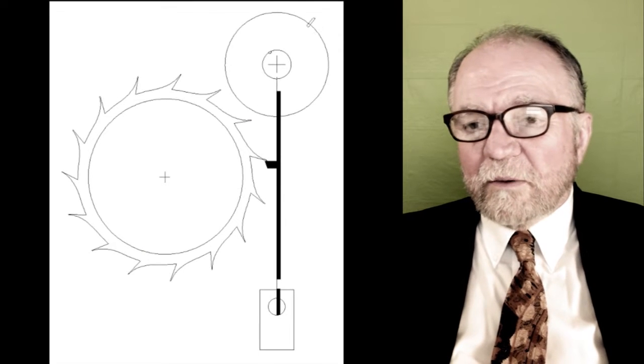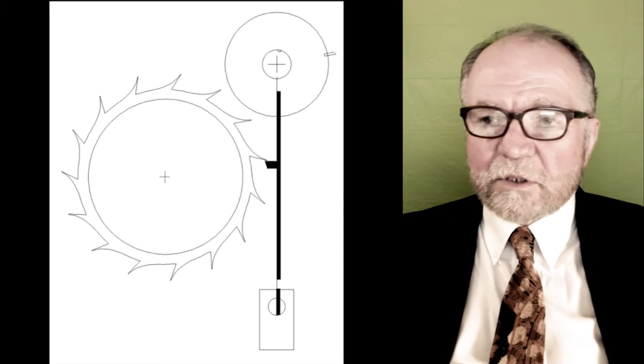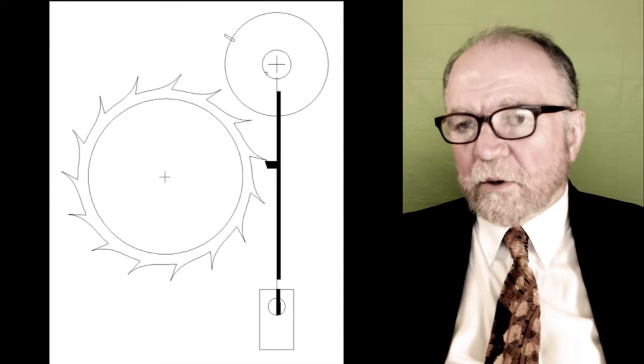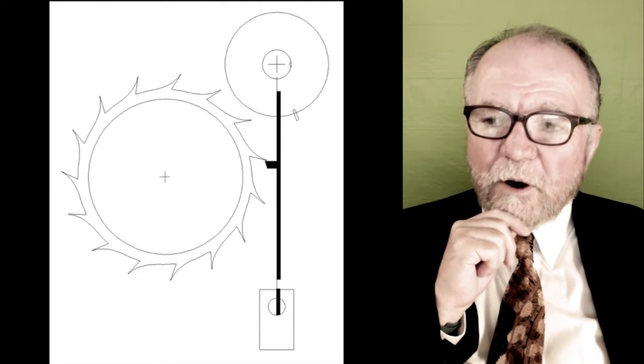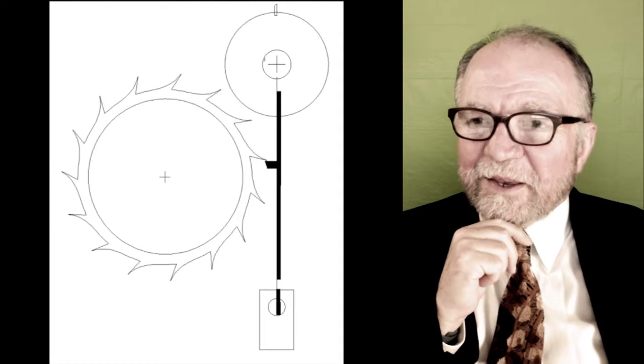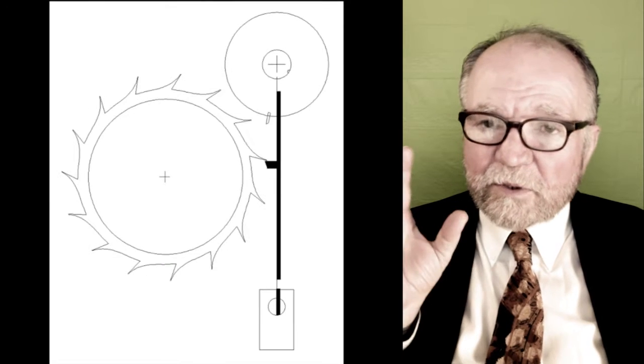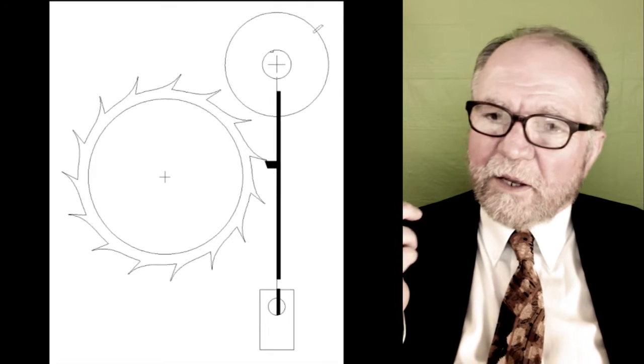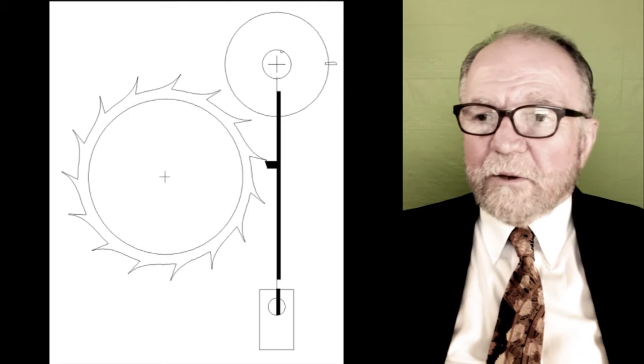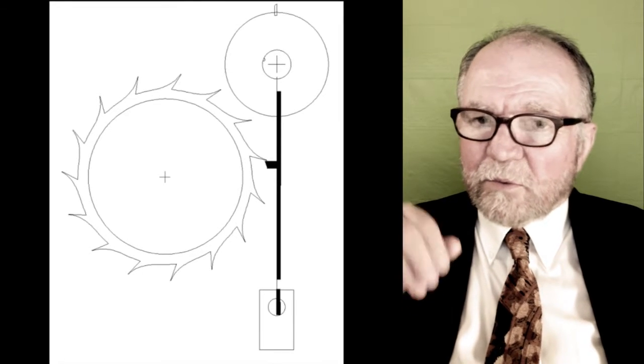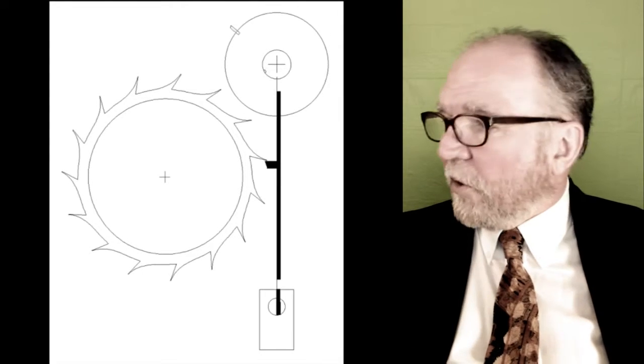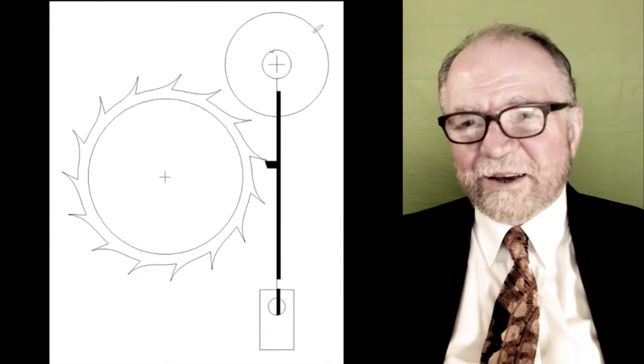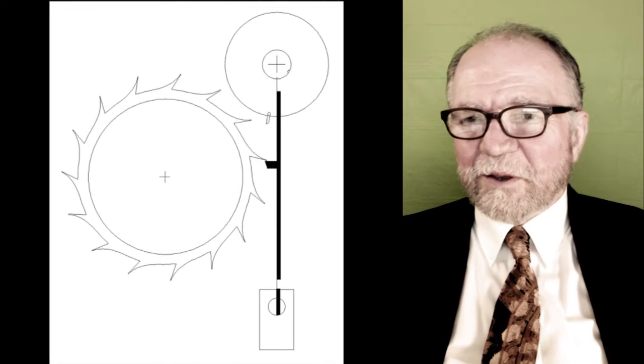What they developed after the lever escapement is called the detent escapement, or some people call it the chronometer escapement. The problem with the detent escapement is that they're fairly big, they weren't self-starting, and they were subject to shocks, but there was far less friction involved in them. It's sort of a cool-looking movement compared to the lever movement.